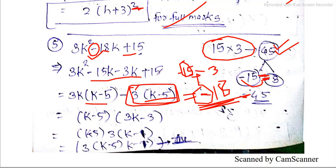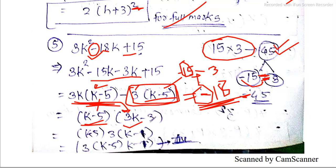So 5 is common, making it a three-term expression. We have 3k² minus 15, and here k minus 5 is a factor. With brackets for two terms, the answer is (k - 5)(3k - 3), and 3 is common, giving 3(k - 1). This is your answer.